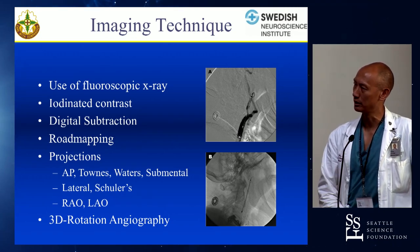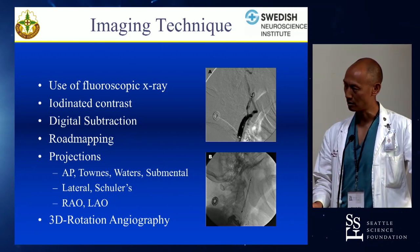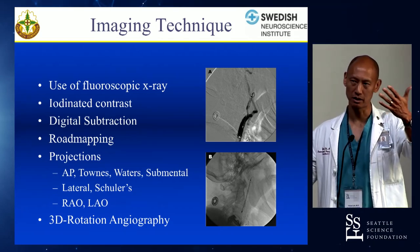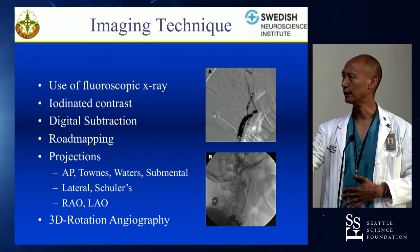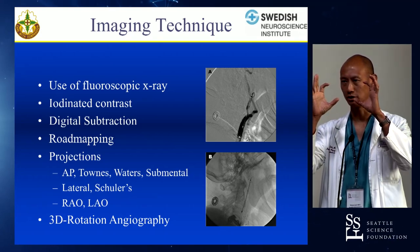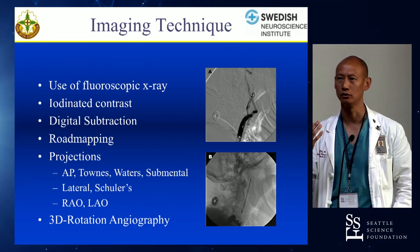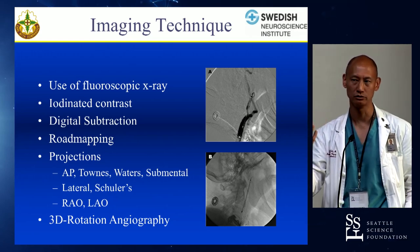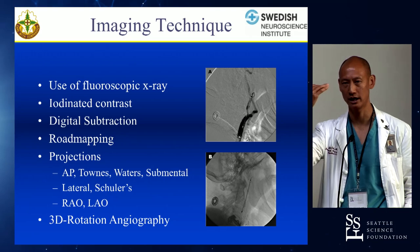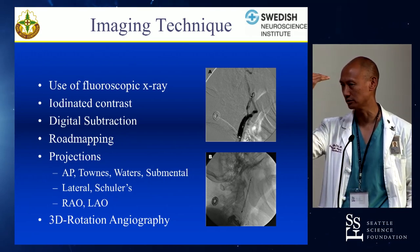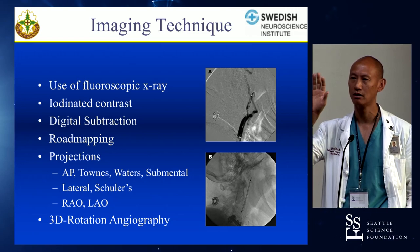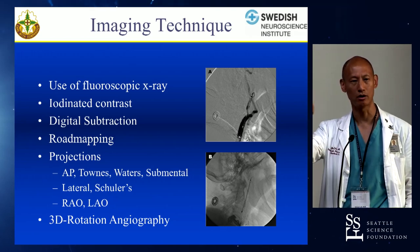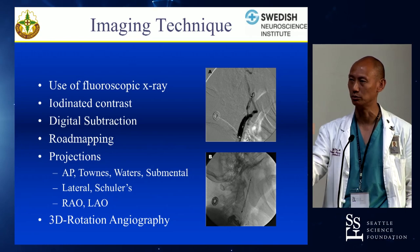Projections you will hear me talk about are AP, Towns, Waters, and submental. With the AP tube, a true frontal will be a transorbital view — that view is not that useful in looking at the internal carotid artery. When people use the misnomer of AP for the frontal view of the ICA, it's typically more of a slight Towns view, because you actually want to bring the ophthalmic arteries off of the siphon. If you do it straight frontal, you'll get the ophthalmic arteries coming at you with superimposition over it.